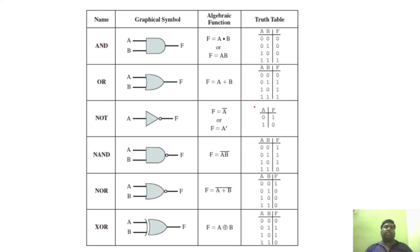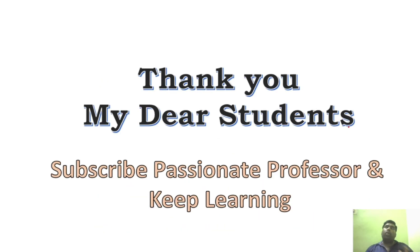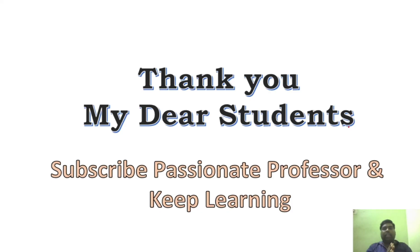Today we have seen different types of gates: basic gates, universal gates, and other gates. Hope you understand the logic of logic gates. In logic gates, you can implement various Boolean algebra expressions. For example, A into B is implemented using an AND gate, and A plus B is implemented using an OR gate.